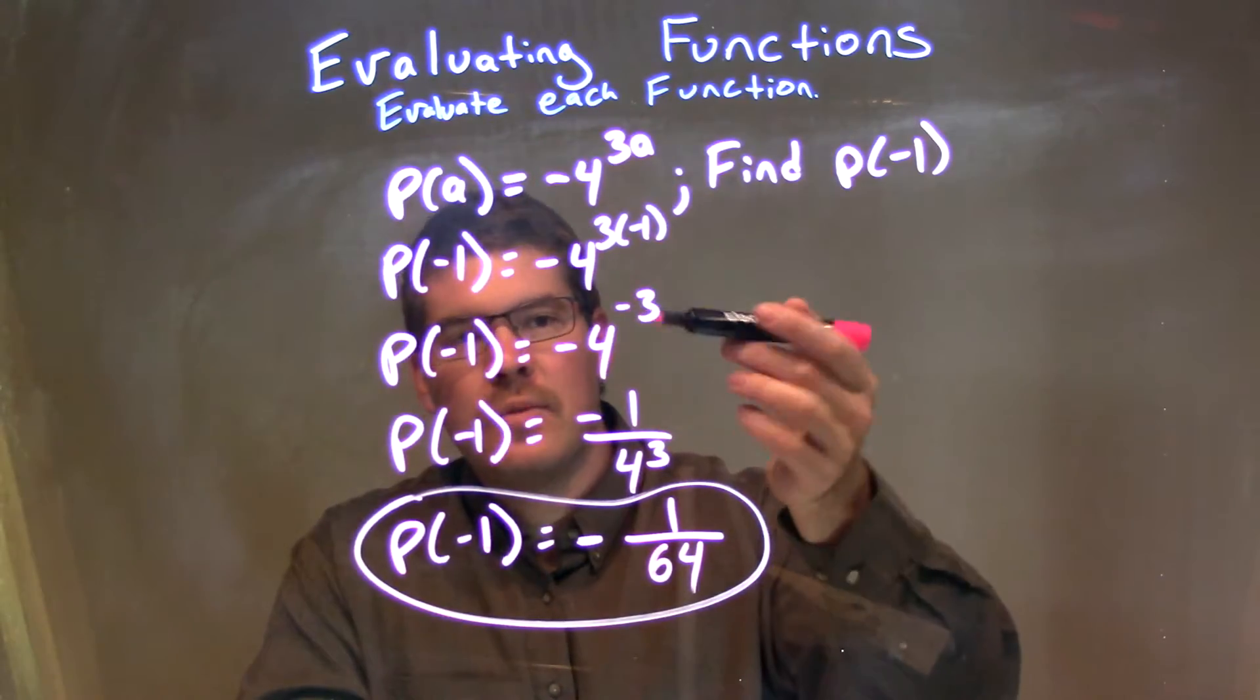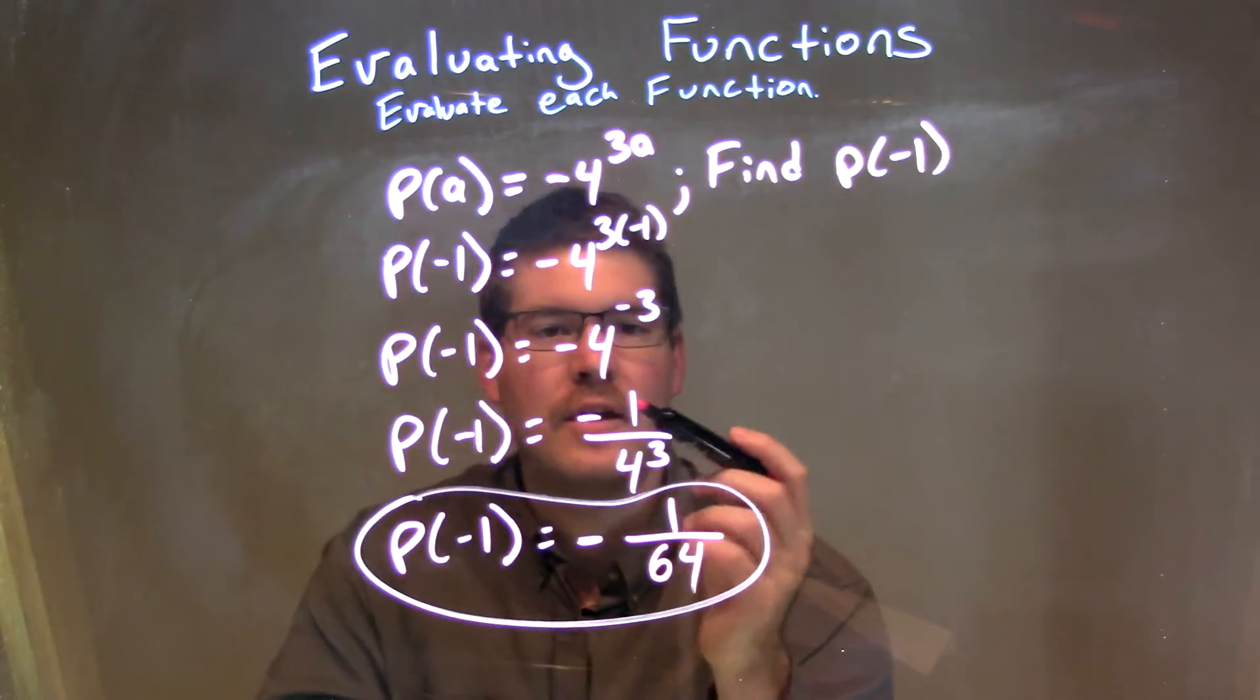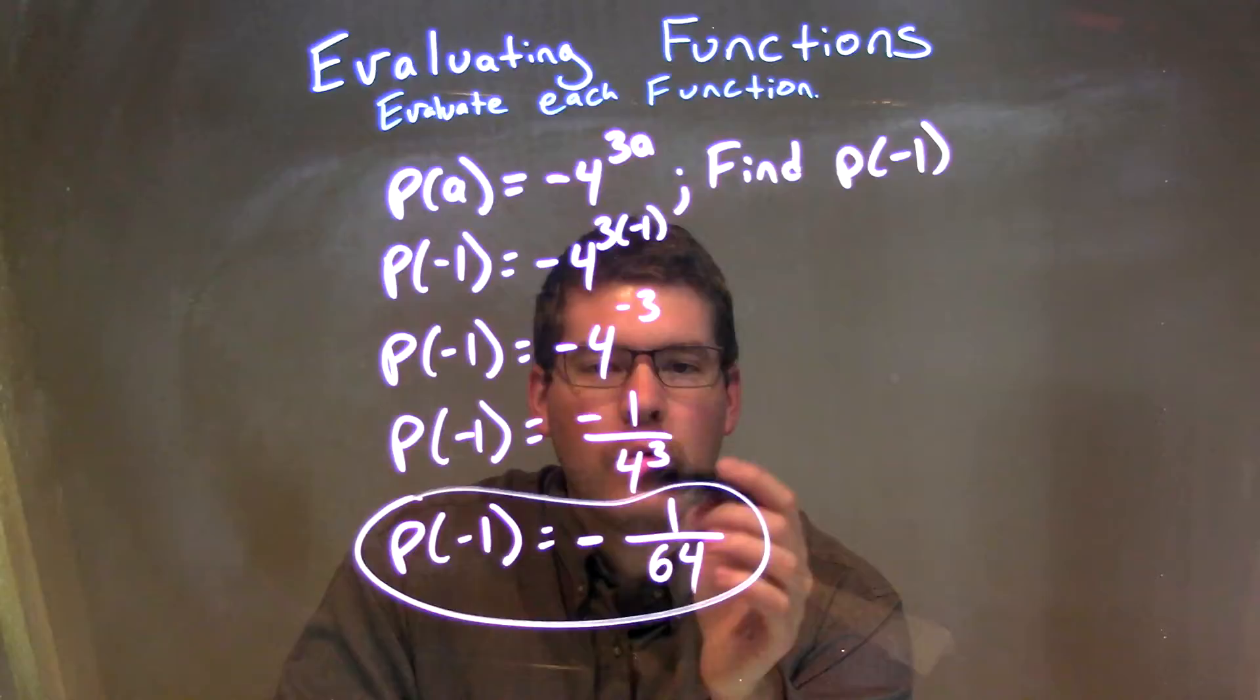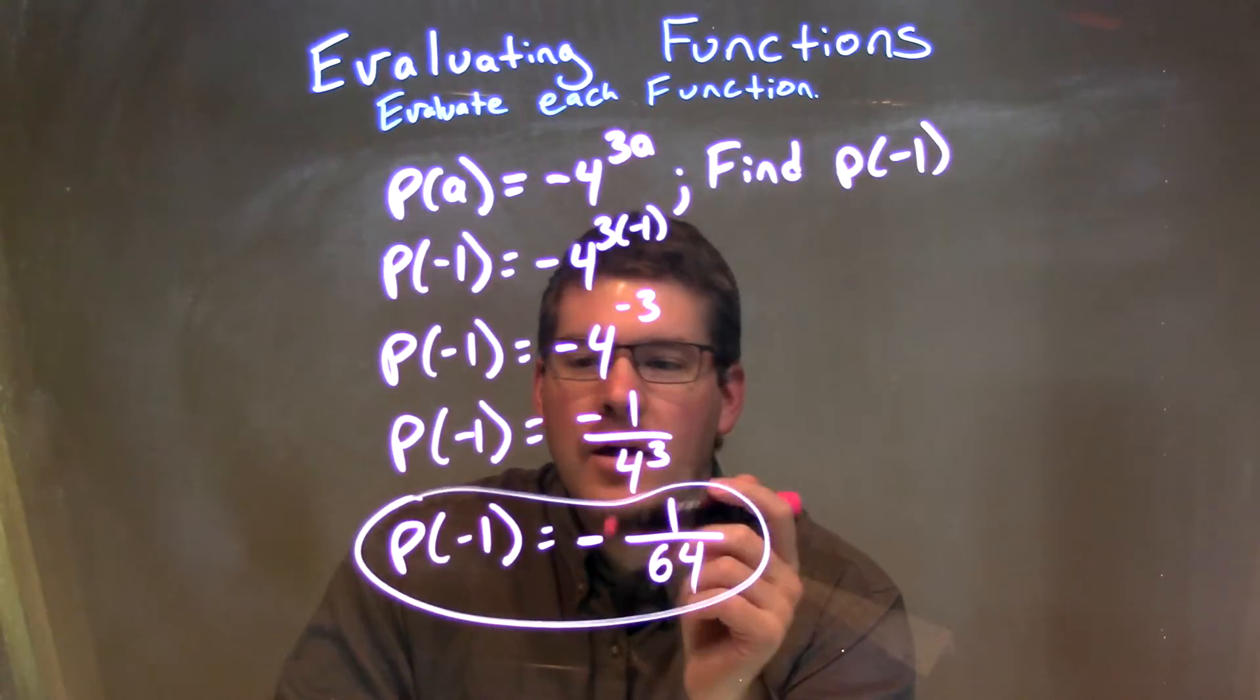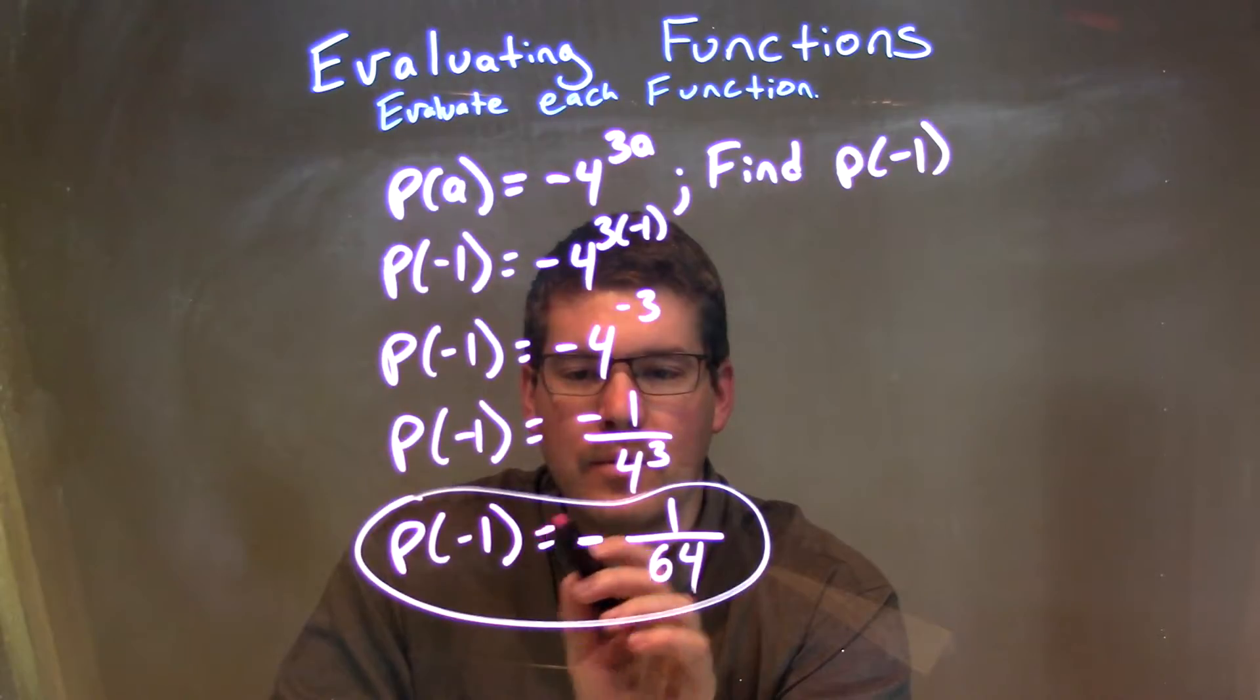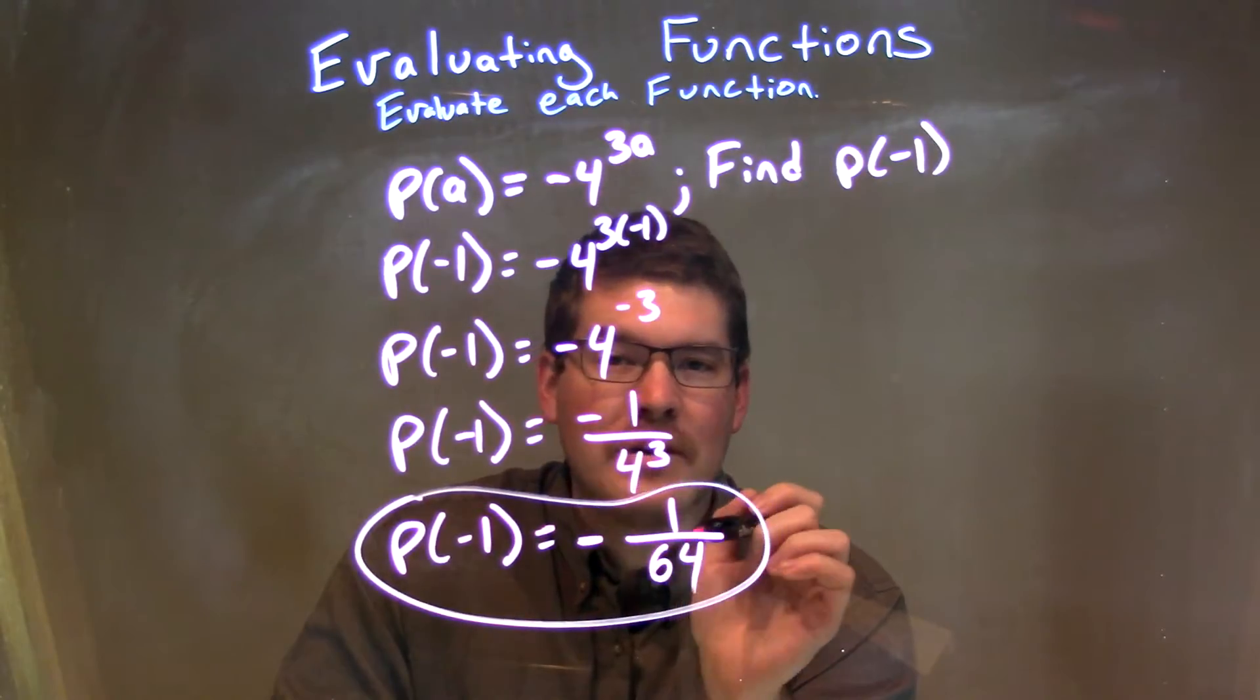Since we have a negative exponent, I put it into the denominator and make it a positive exponent. So we have negative 1 over 4 to the positive 3rd power. 4 to the positive 3rd power is 64. So our final answer here is P of negative 1 is equal to negative 1 over 64.